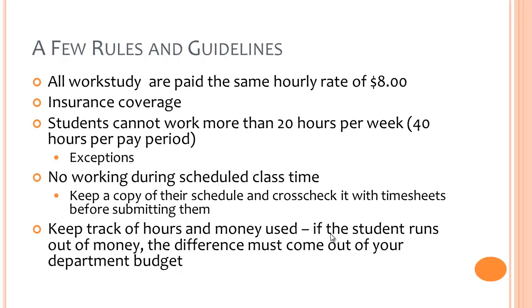Just like you have your allocation for hours, students have an allocated dollar amount. If you run out of hours or the student runs out of funds, the difference must come out of your department budget. If you notice that your department allocation is running low, please contact Tim Jacobson, the Financial Aid Director. If you notice that your student is running low on Work Study funds, please contact Nida or Kendra.